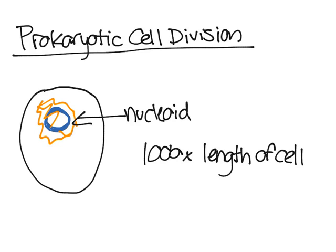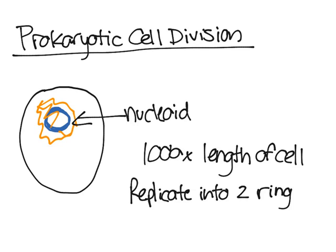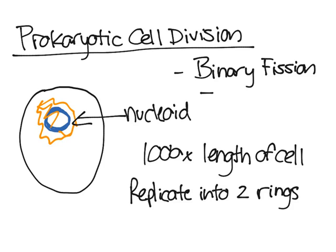What happens before the cell actually divides is it will replicate into two rings, very similar to eukaryotic cell division. There's only one major way prokaryotes divide, and this is binary fission.